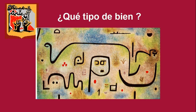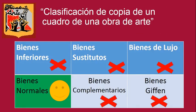Ahora vamos a trabajar con otro tipo de bien: la copia de un cuadro de una obra de arte. Lo primero que tenemos que preguntarnos es ¿qué tipo de bien es? Tenemos bienes inferiores, bienes sustitutos, bienes de lujo, bienes Giffen, bienes complementarios y bienes normales. Es un bien normal. Entonces, ante aumentos en el precio la cantidad demandada va a disminuir, y cuando disminuye el precio aumenta la cantidad demandada. La copia de un cuadro de arte tiene elasticidad perfectamente elástica.